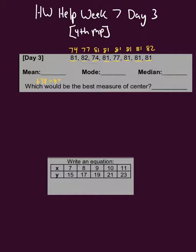Now for my mode, the mode is the number or numbers that occurs the most. I see 81 occurs the most so 81 is the mode.